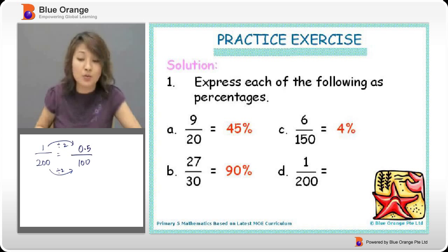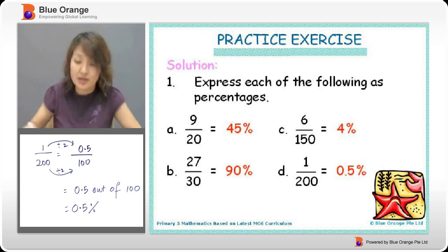Now, how am I going to put this as a decimal? Just 0.5 out of 100, which is 0.5 over 100. So it's 0.5%.